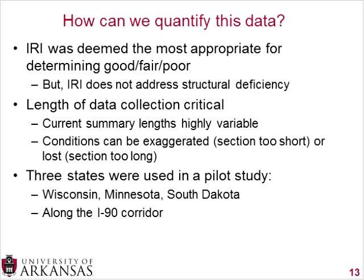For pavements, how can we quantify this data? The FHWA deemed the IRI — the International Roughness Index — as most appropriate for determining good, fair, or poor condition. However, something they found and addressed in this report is that the IRI does not address structural deficiencies in any way. Basically, the IRI captures whether a pavement surface is smooth and level. You can have a very smooth and level pavement that actually has structural problems — something they deemed needed further research.